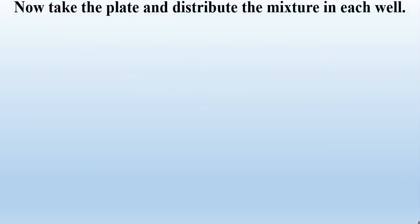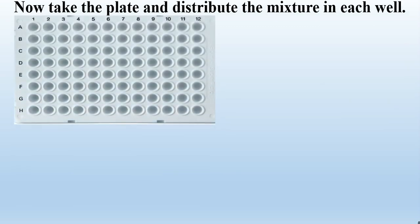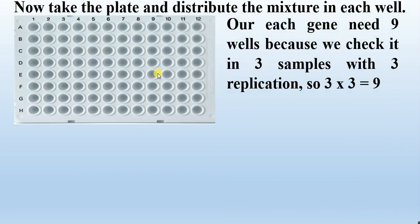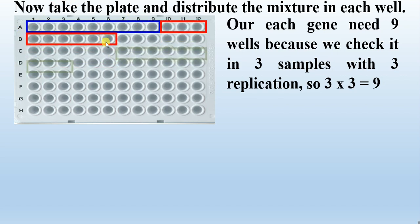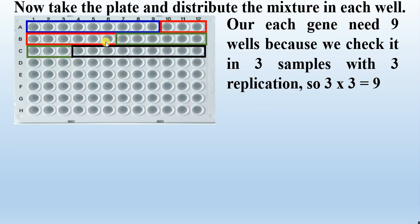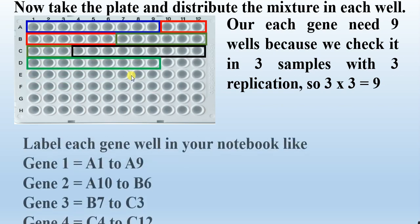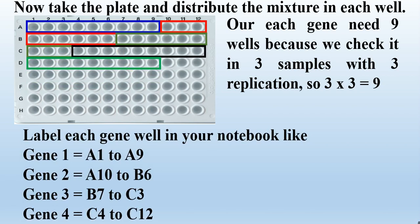Now take the plate and distribute the mixture into each well. Each gene requires 9 wells because we check it in 3 samples with 3 replications each (3 × 3 = 9). Wells A1 through A9 are for gene 1. Label each gene's wells in your notebook: gene 1 occupies A1 to A9.